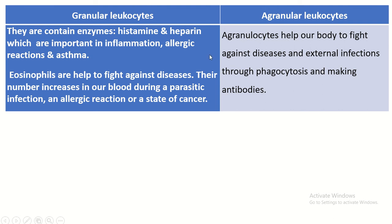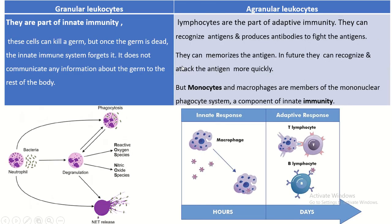The agranular leucocytes help our body fight against disease and external infection through phagocytosis and by making antibodies. The granular leucocytes are part of innate immunity. These cells can kill a germ, but once the germ is dead, the innate immune system forgets it — it does not communicate any information about the germ to the rest of the body. Here, the neutrophil engages bacteria through degranulation.